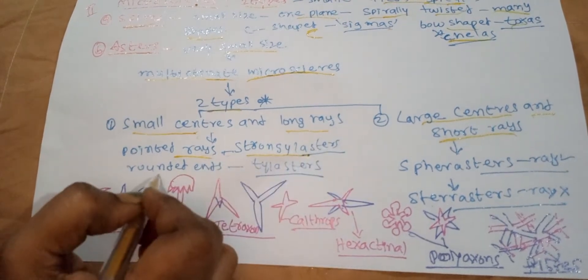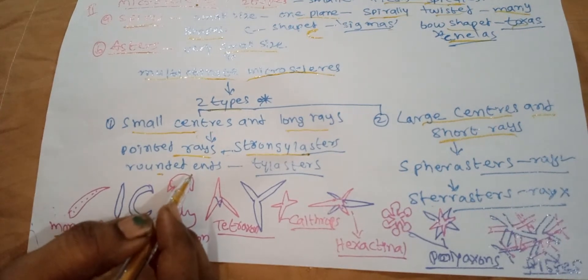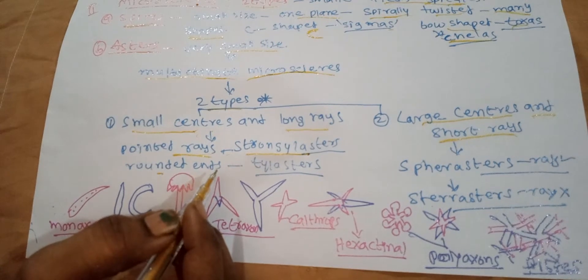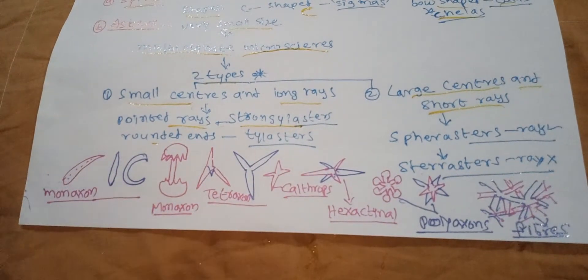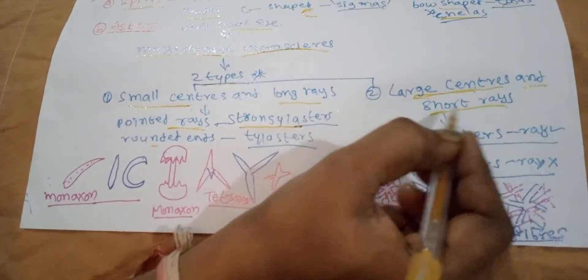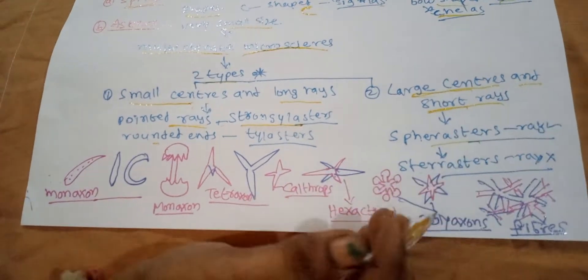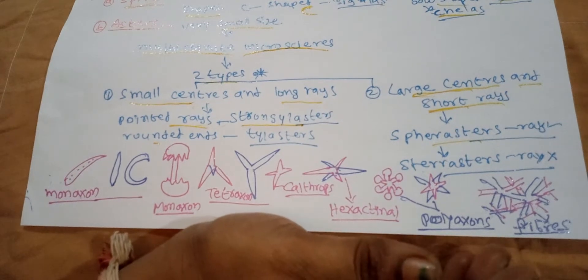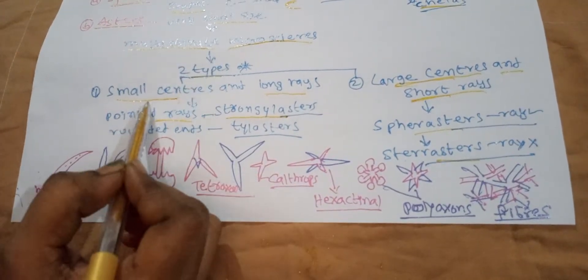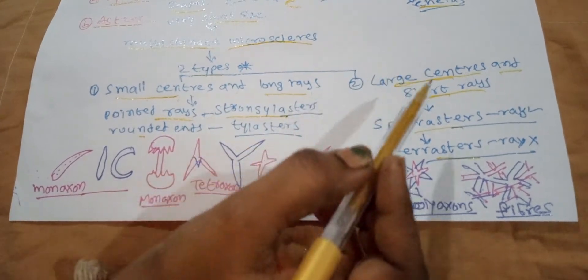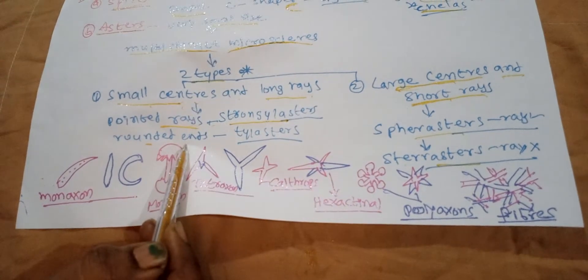Strongylasters have rounded ends, and triasters have knobbed rays. Those with a large centre and long rays are called spear asters — with different rays — and sterrasters with rays reduced. So asters are of two types: small centre with long rays, and large centre with short rays, called sterrasters or triasters.